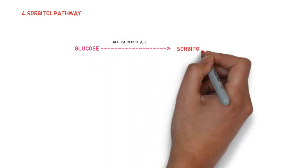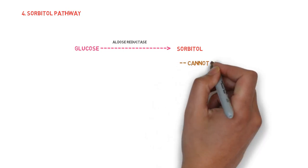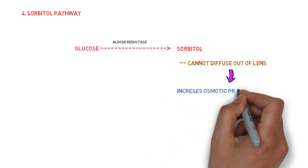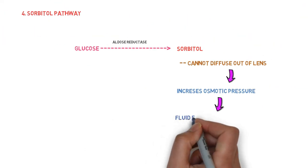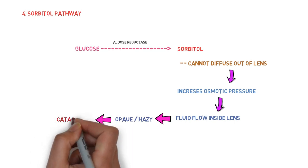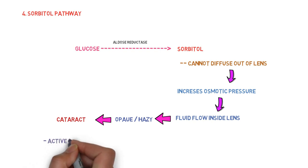In sorbitol pathway, glucose is metabolized by aldose reductase to sorbitol. The major problem with the sorbitol pathway is that sorbitol cannot diffuse out of the lens, and because of that there is gradually increasing osmotic pressure. And due to increasing osmotic pressure, the fluid from outside starts flowing inside, and therefore there may be complications of opacity or haziness of the lens, and finally it will end with cataract. The sorbitol pathway is mainly active in diseases like diabetes mellitus or in galactosemia.